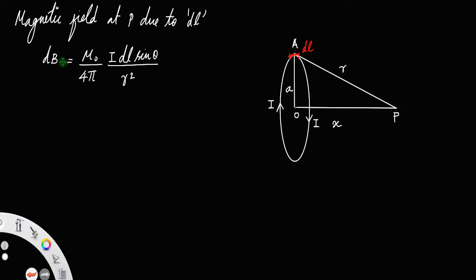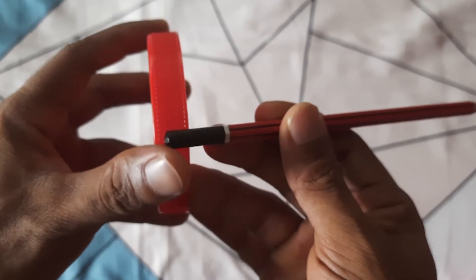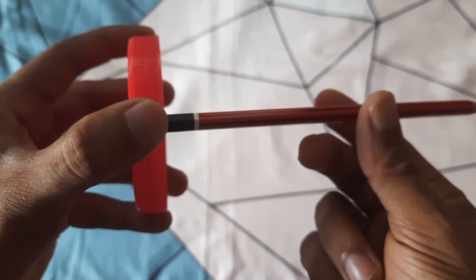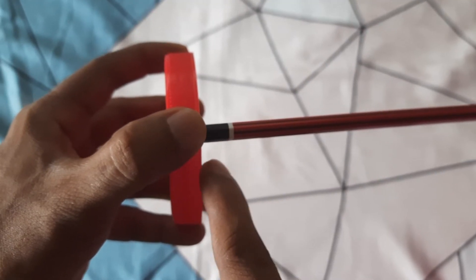This R represents the length AP. When you look from above, AP represents the slant height — it is somewhat like a cone where this is the base circle and AP represents the slant height. The slant height is always perpendicular to the circumference, so θ will be 90°. This represents the axis of the coil and this line is the slant height; this angle will always be 90°. When you look from above the coil, the slant height will be perpendicular to the perimeter of the coil.